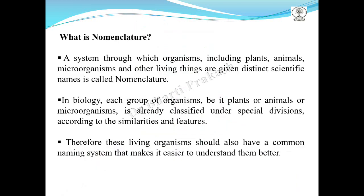So what is nomenclature? This is a system through which organisms including plants, animals, microorganisms and all other living things are given a distinct scientific name. Each group of organisms, whether they are plants or animals, are classified under special divisions according to their similarities and features. Therefore all living organisms should have a common naming system that makes it easier to understand them better.